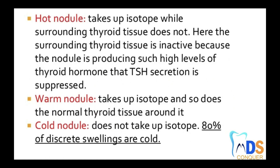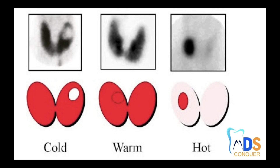Please make a note of this order: hot, followed by warm, followed by cold. A hot nodule is one in which the abnormal tissue takes up the isotope whereas the surrounding normal tissue does not take any sort of isotope. We can clearly appreciate in this diagram that the abnormal tissue takes the isotope whereas the surrounding normal tissue does not.